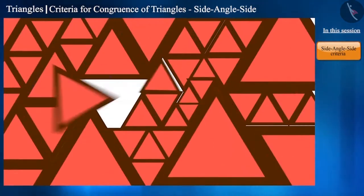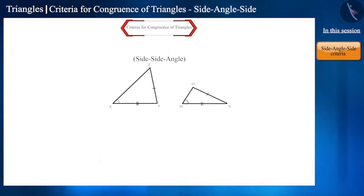Friends, apart from SAS, are two triangles congruent by the SSA rule, wherein two sides and one angle of a triangle which is not within these sides are equal to the sides and one angle of another triangle? By looking at the figure, we can tell that these two triangles are not congruent. Therefore, SSA cannot be accepted as the test for the congruence of triangles.